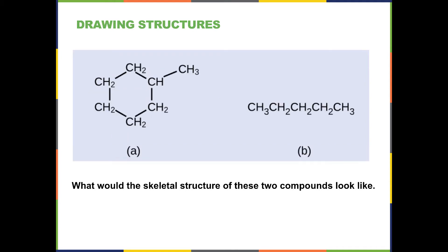As an exercise, see if you can draw the skeletal structure for these two compounds. The one on the right is a ring structure with one methyl group coming off, and the one on the left is a straight-chain heptane. You can stop the tape at this point, get out a piece of paper, and see if you can do it.